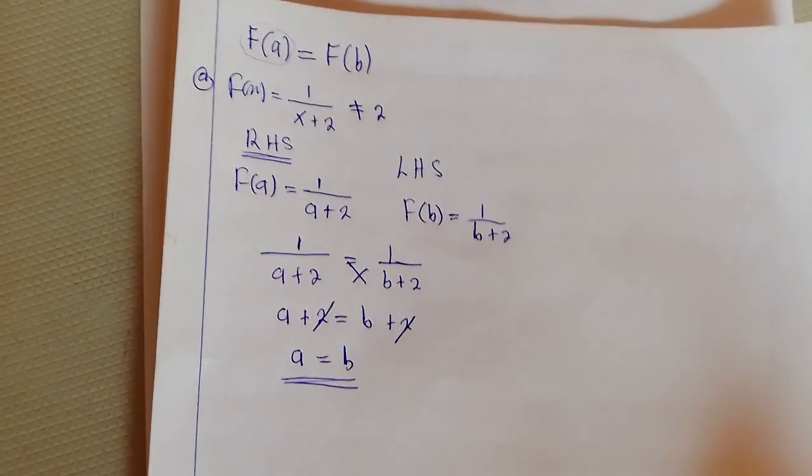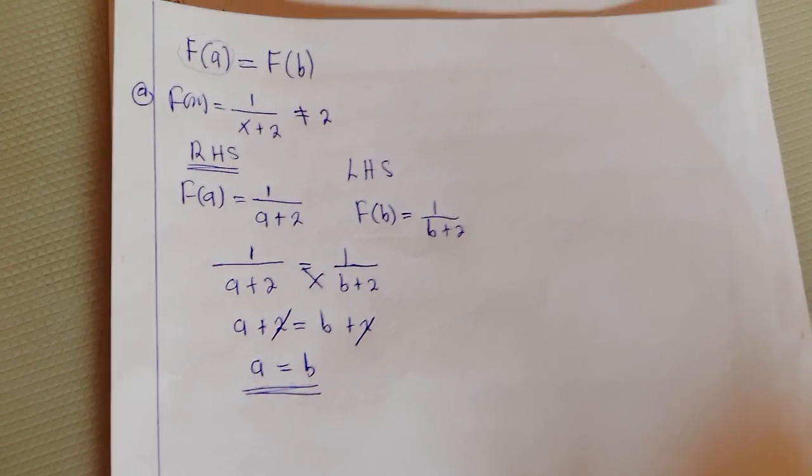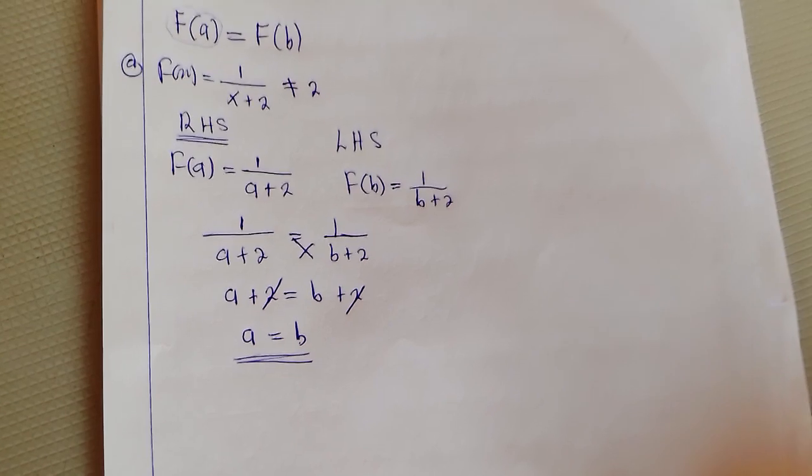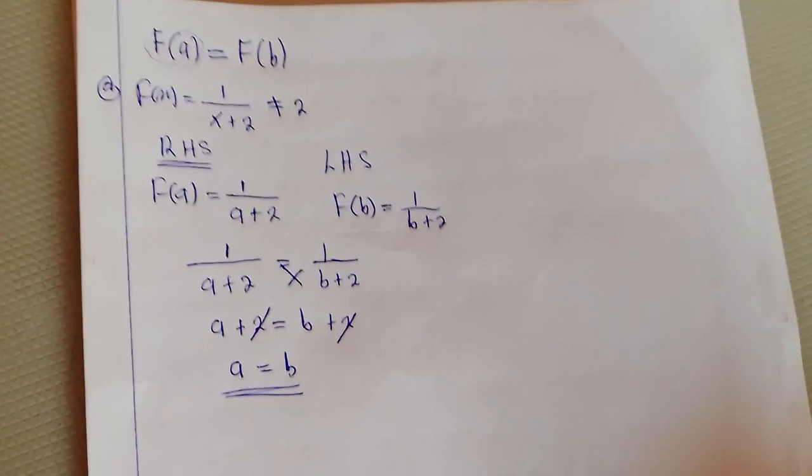Therefore, you have proved that this function is a one-to-one function. Let's get to the other part, which happens to be B.